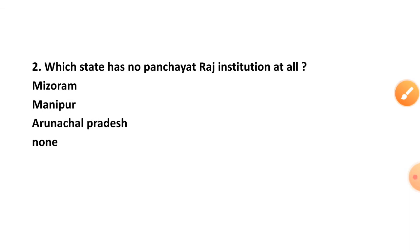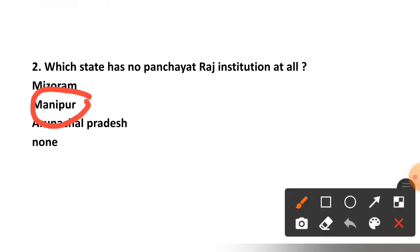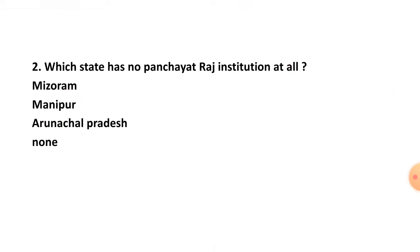Question number two: Which state has no Panchayat Raj institution at all? Mizoram, Manipur, Arunachal Pradesh, or none? The right option is option number two — Manipur. Besides Manipur, two other states — Nagaland and Meghalaya — also have no Panchayat Raj institution at all.